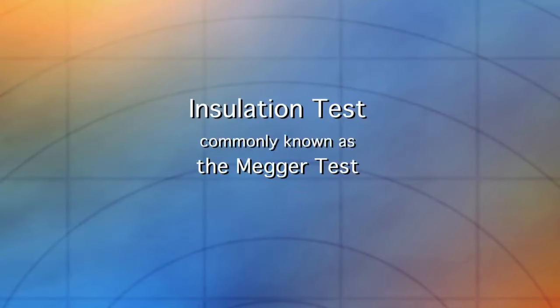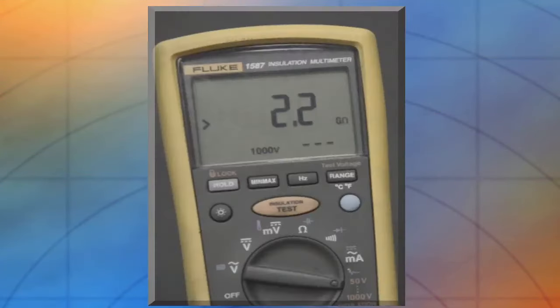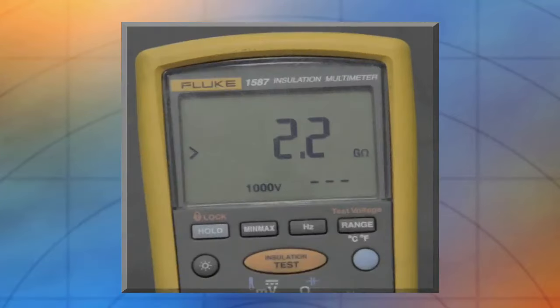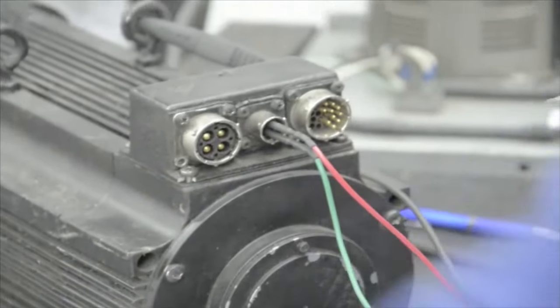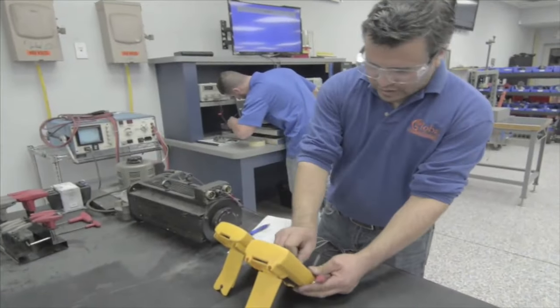Now, an insulation test, commonly known as a MEGAR test, using an insulation multimeter is being performed. We first connect one lead to ground and check through each phase to ensure that the windings are not grounded or that the insulation is not broken down.